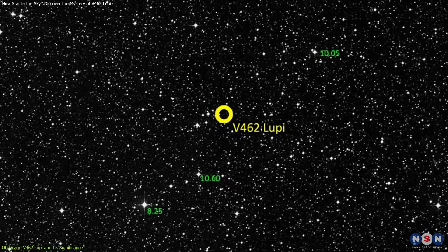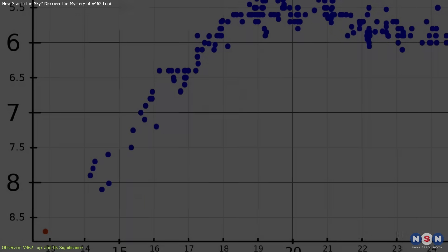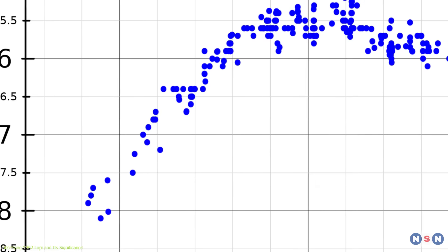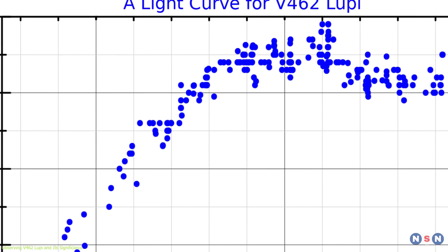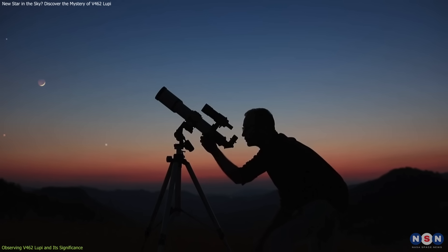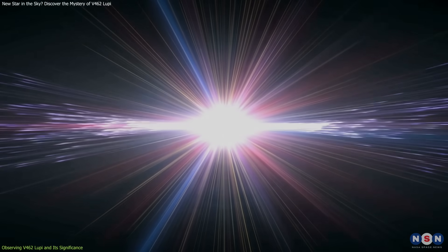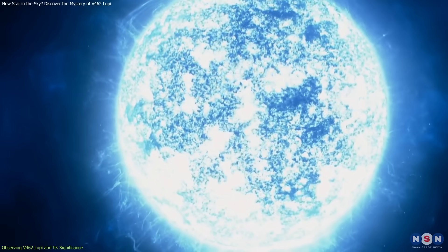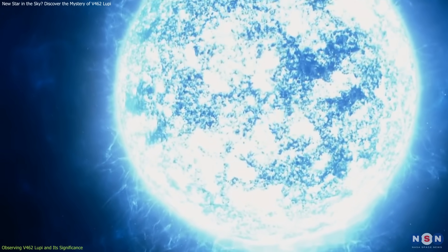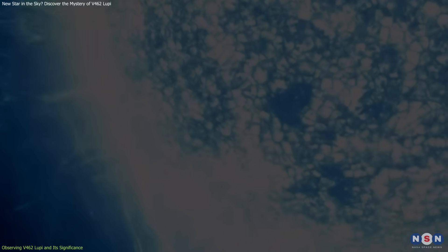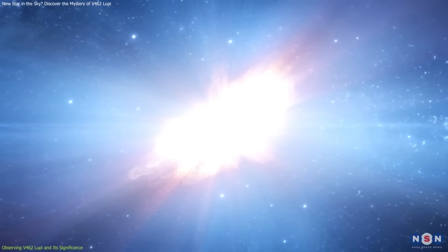When the nova was first discovered, it was faint at magnitude 8.7, but within days it had brightened to magnitude 6.1, making it visible without the need for a telescope. This represents an increase of over 3 million times in brightness, as the progenitor star had an initial magnitude of 22.3 before the explosion. Such a dramatic increase is characteristic of novae, which can cause a star to shine much brighter than usual for a short period.